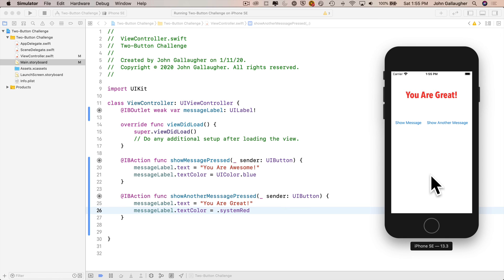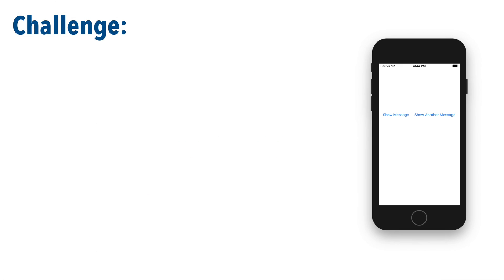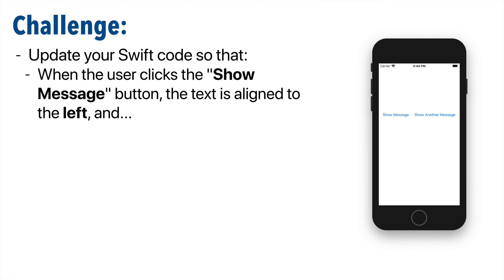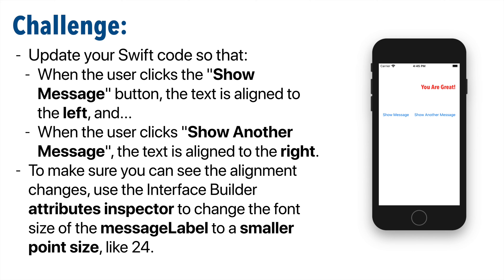Now here's another quick challenge: update your Swift code so that when the user clicks Show Message the text is aligned to the left, and when they click Show Another Message the text is aligned to the right. You haven't worked with textAlignment before, but you saw it in code completion earlier. Apply what you learned about types and dot notation — you should be able to figure it out. Also go into Interface Builder and set the message label font to a smaller size like 24 so alignment is visible. Good luck!